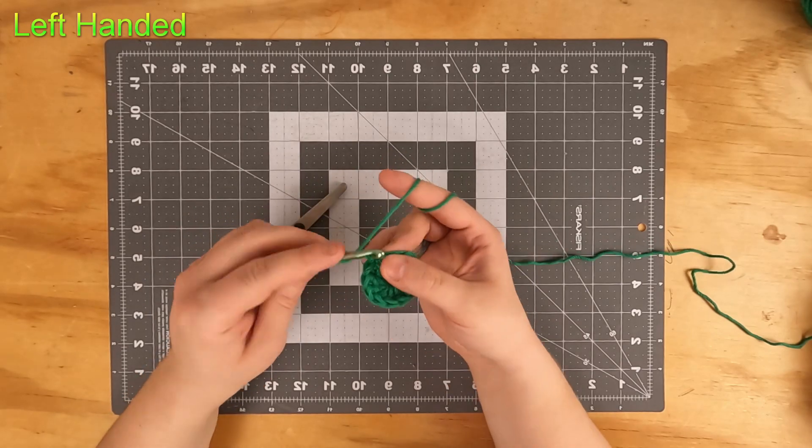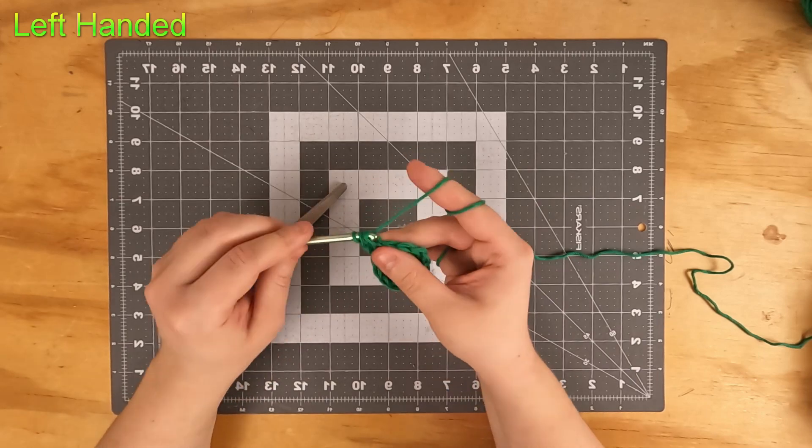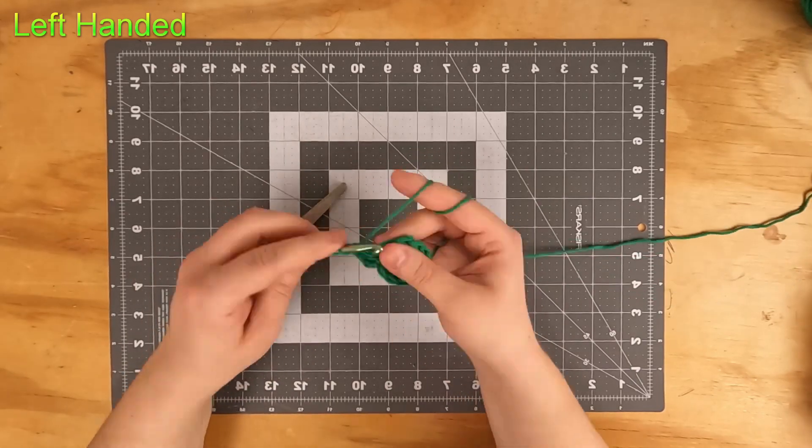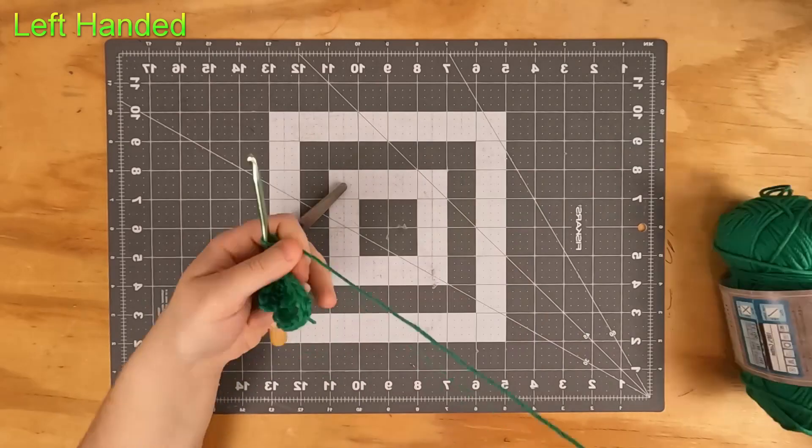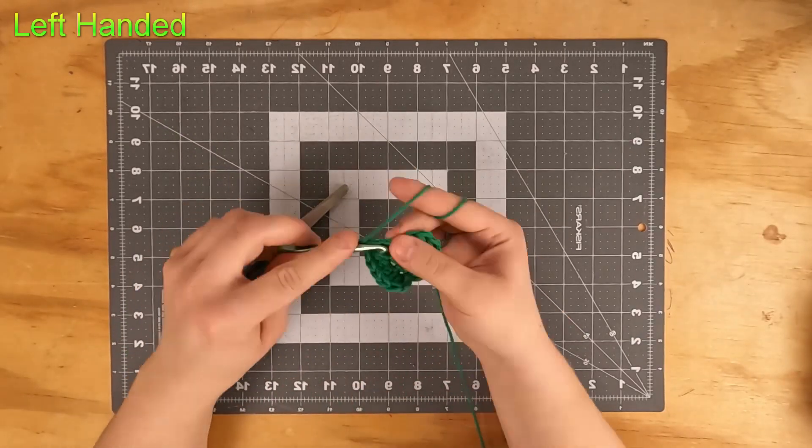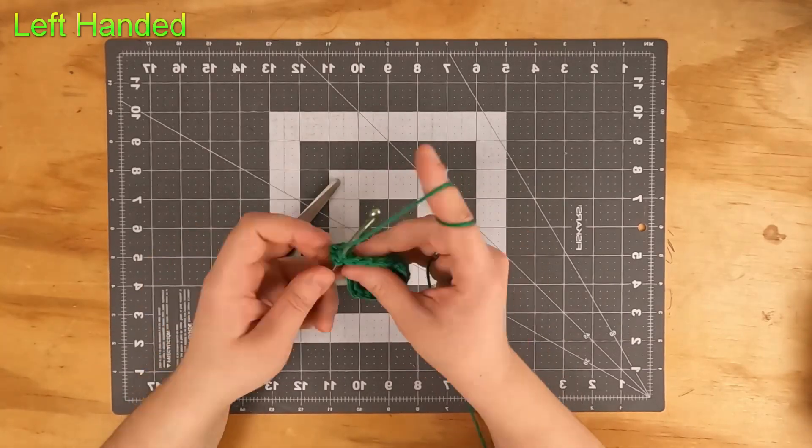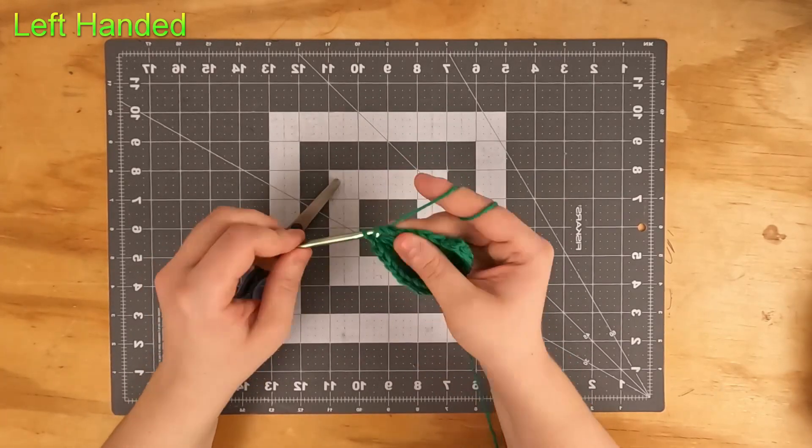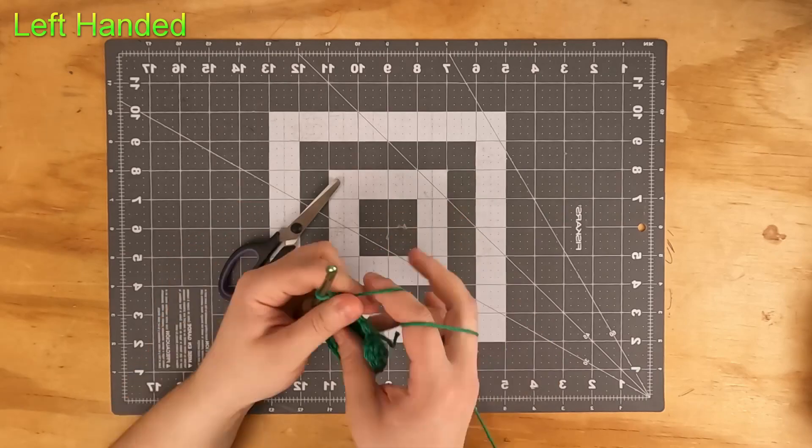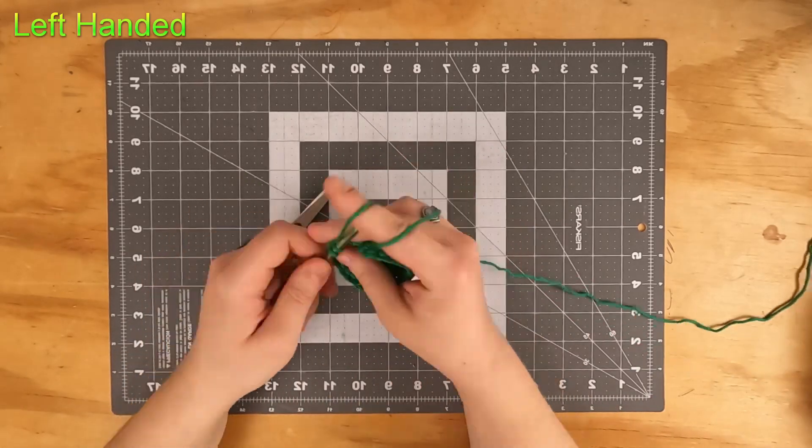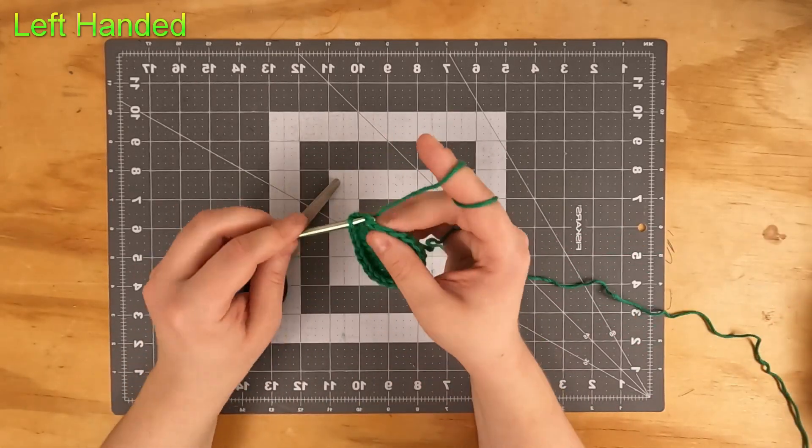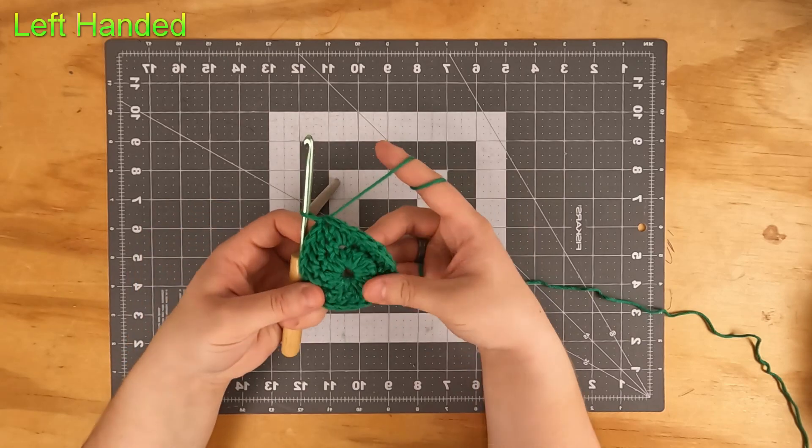Go ahead and chain up two more. For round two we're going to put two double crochets in each, so it's a double crochet increase in each stitch. Slip stitch to the first double crochet.